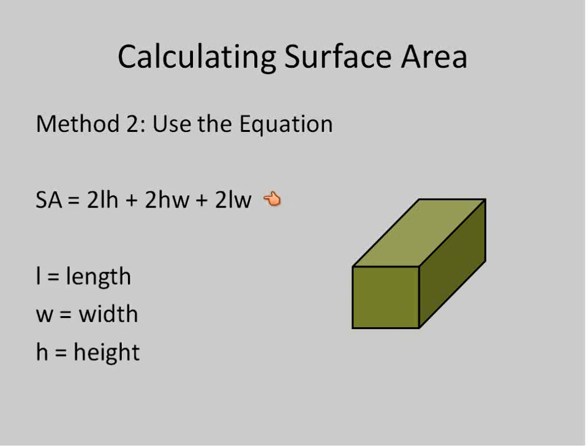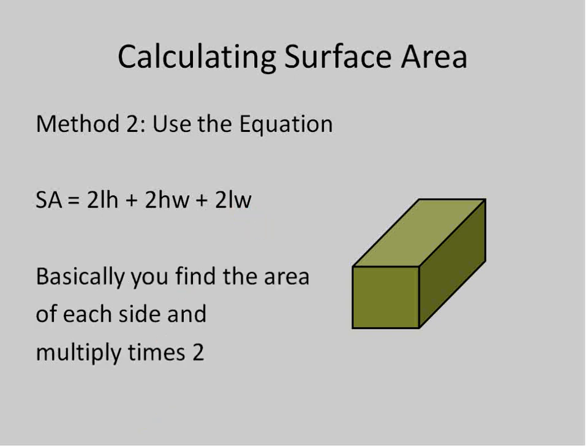So here's the equation for finding the surface area of this rectangular prism. You can see there it's two times the length times the height. L and H is length and height. Two times the height times the width. And two times the length times the width. Basically what you're doing is you're finding the area of each side and then multiplying it times two.